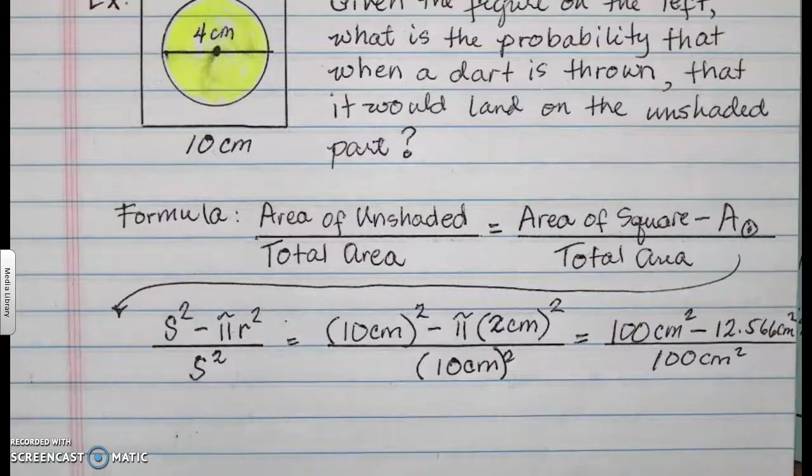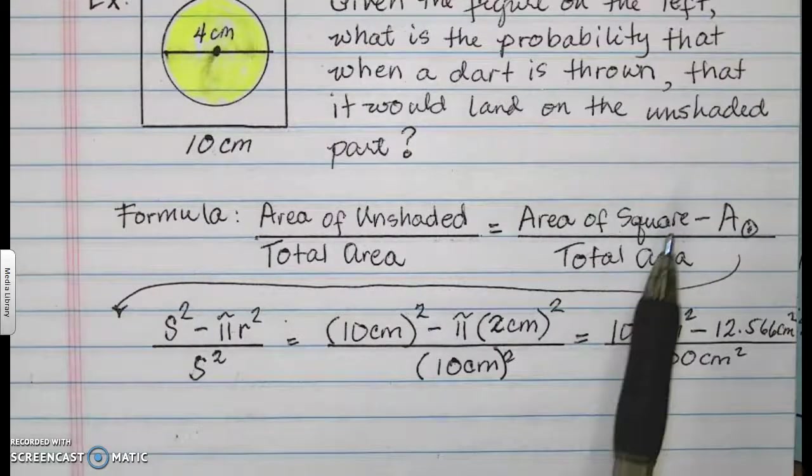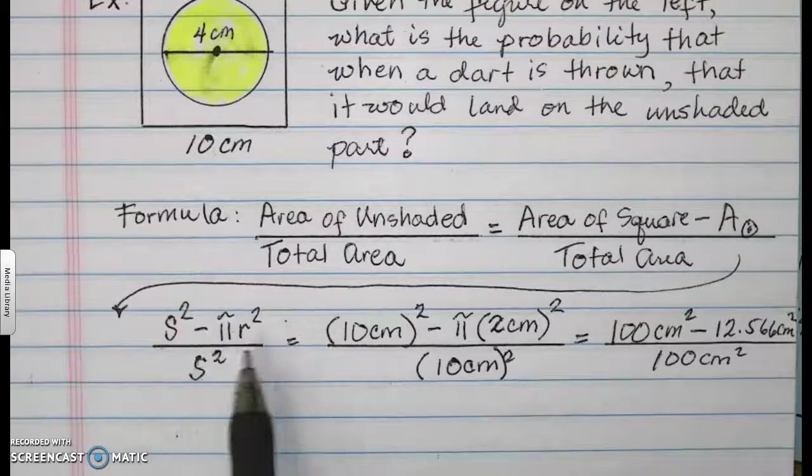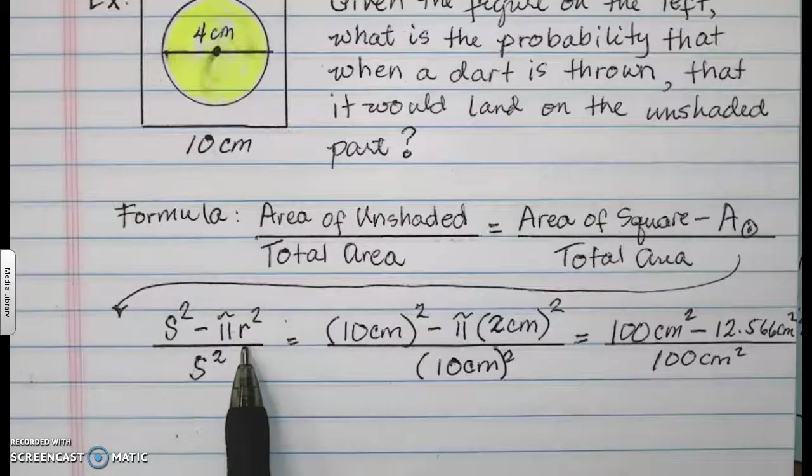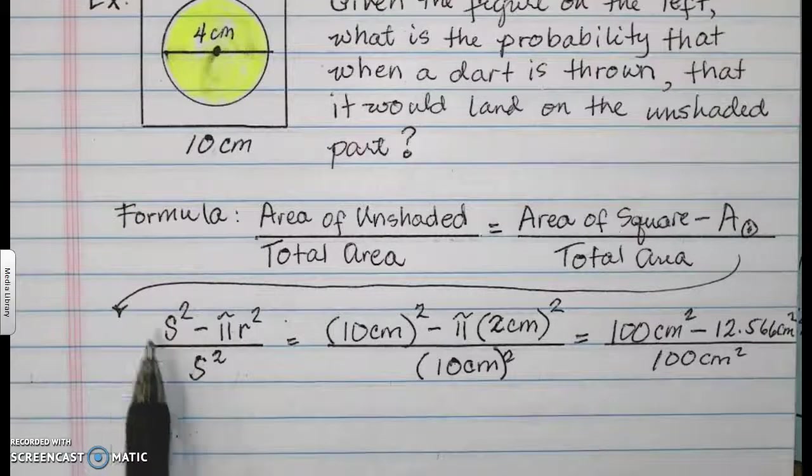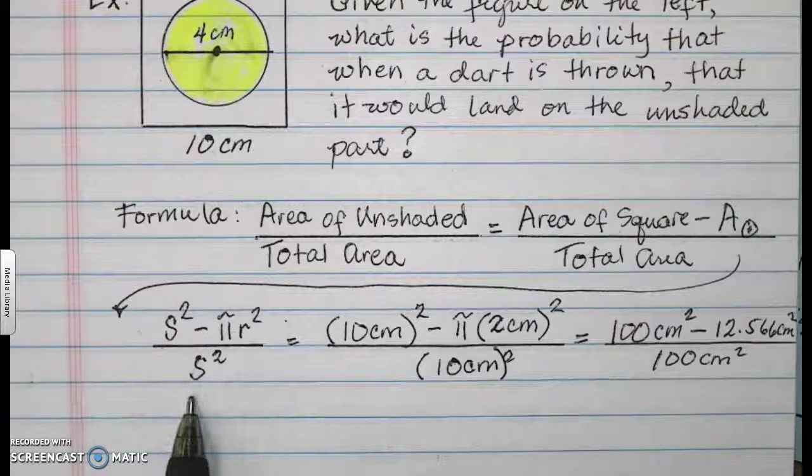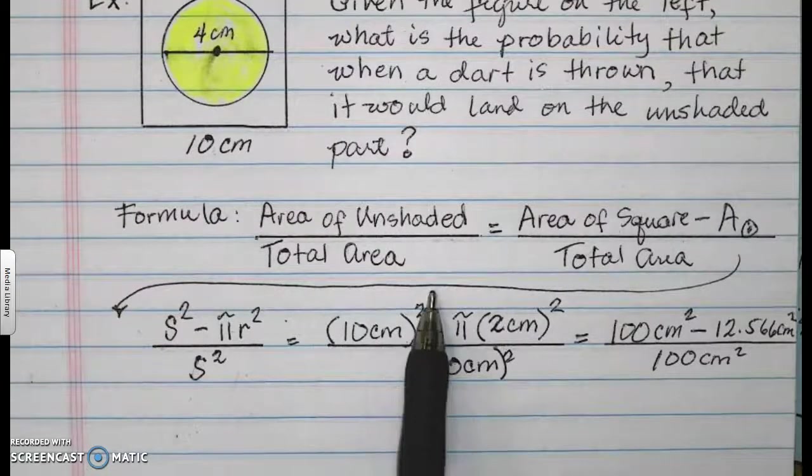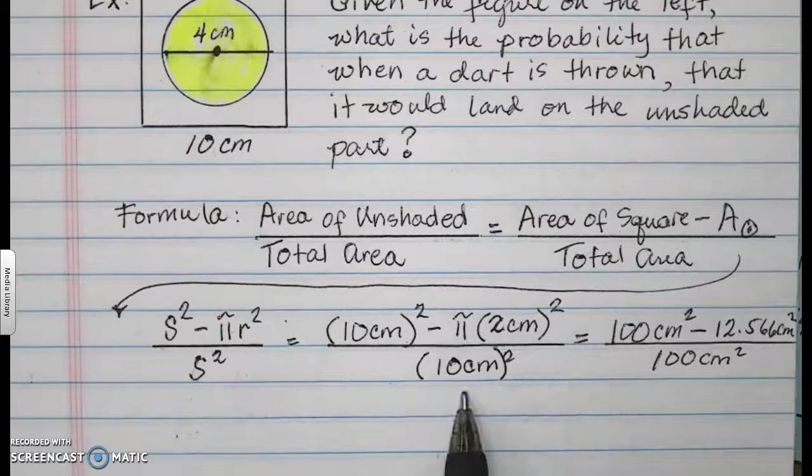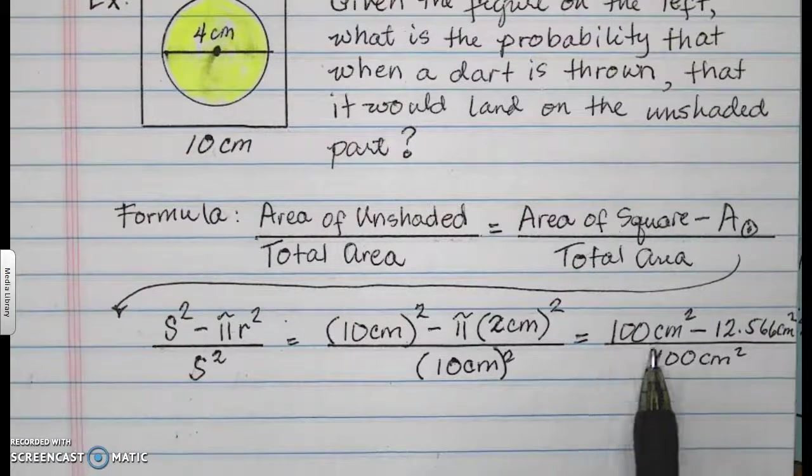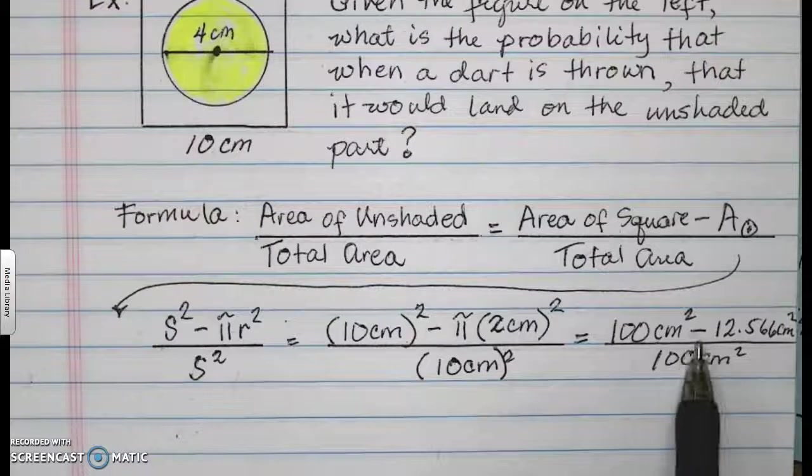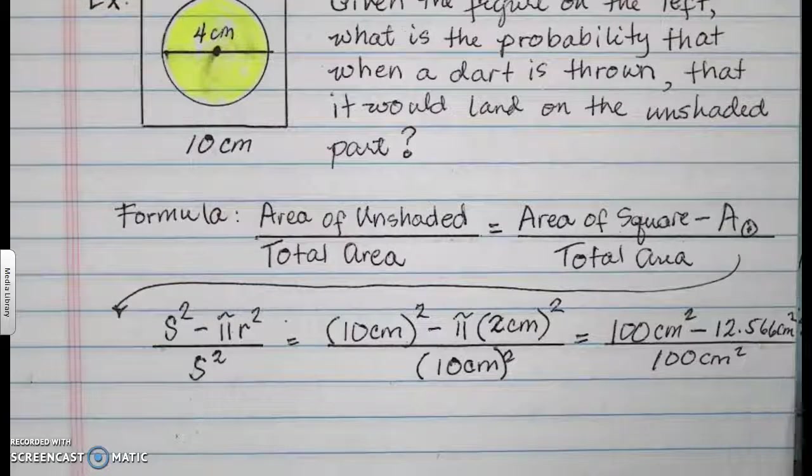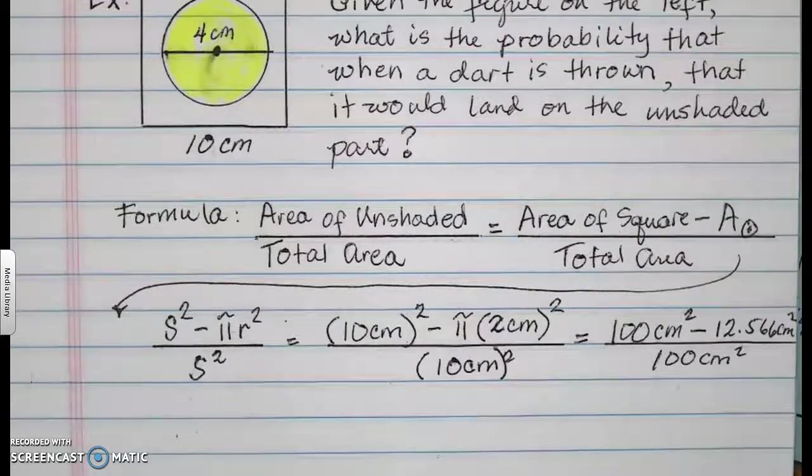So let us go ahead and calculate that. If you have the area of the square minus the area of the circle, that is going to give you the area of the unshaded region. You're going to put that all over the area of the square. So 10 centimeters squared minus πr² over 10 centimeters squared will give you 100 cm² minus approximately 12.566 cm² all over 100 cm².